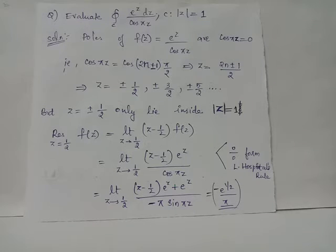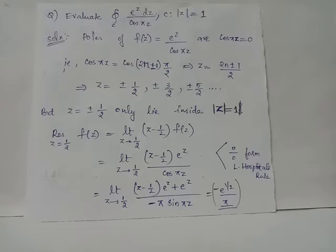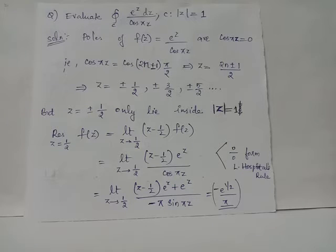That is, πz equals an odd multiple of π/2, and after cancelling π, z takes the values ±1/2, ±3/2, ±5/2, ±7/2, and so on. Of these poles, only z = ±1/2 lie inside the circle |z| = 1, because only these two poles have modulus value less than 1. All other poles have modulus greater than 1 and lie outside the circle.